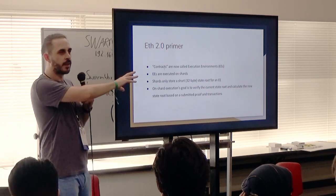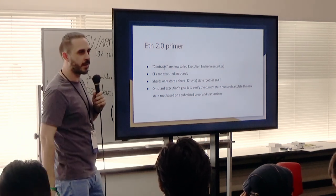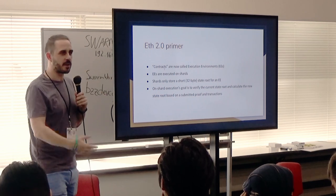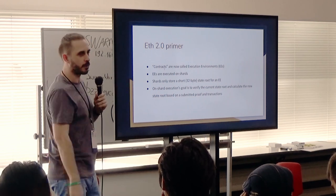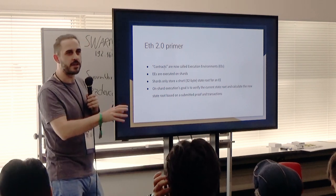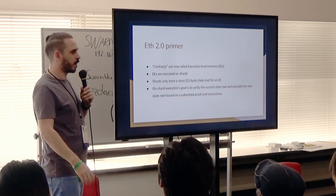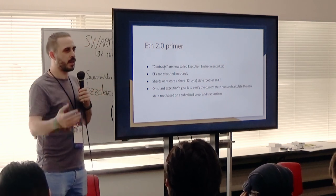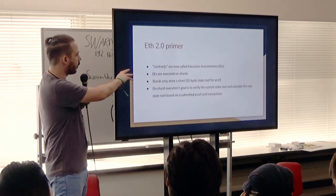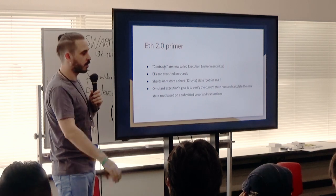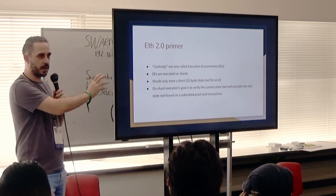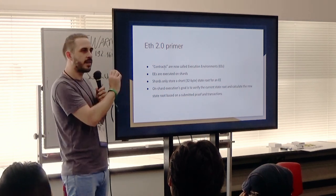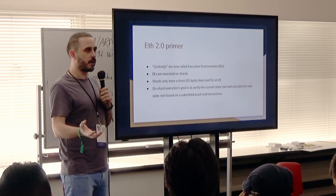A primer on E2.0: contracts aren't called contracts anymore — we have the more confusing term 'execution environments' or EEs. EEs are executed in the shards in this proposal. These shards only store a tiny amount of data for each environment — they only store a state root, which is a 256-bit value. The execution on these shards is about proving: you supply your proof and verify that it ends up with the same state root stored in the shard. You also supply new transactions. First verify you supplied the right things, then make the changes and calculate and store the new value.